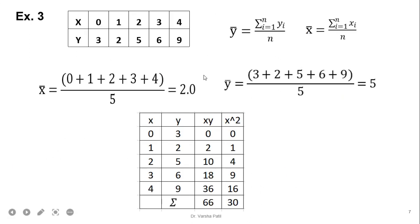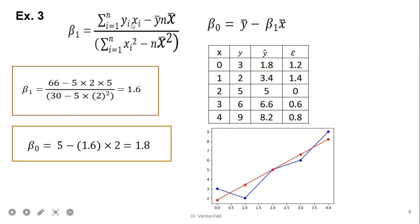Let us see the third example. Here there are 5 samples. We require 4 columns — x, y, x·y, and x². We calculate x-bar, y-bar, the summation of x·y, and the summation of x². Putting the values into the beta 1 equation, we are getting the slope as 1.6. The slope is positive, so we get a positively directed line. Beta 0 is equal to 1.8. Here we can find that the prediction line and the sample points are matching, so error is 0. These are the original y values and the model predicts these values based on beta 0 and beta 1.